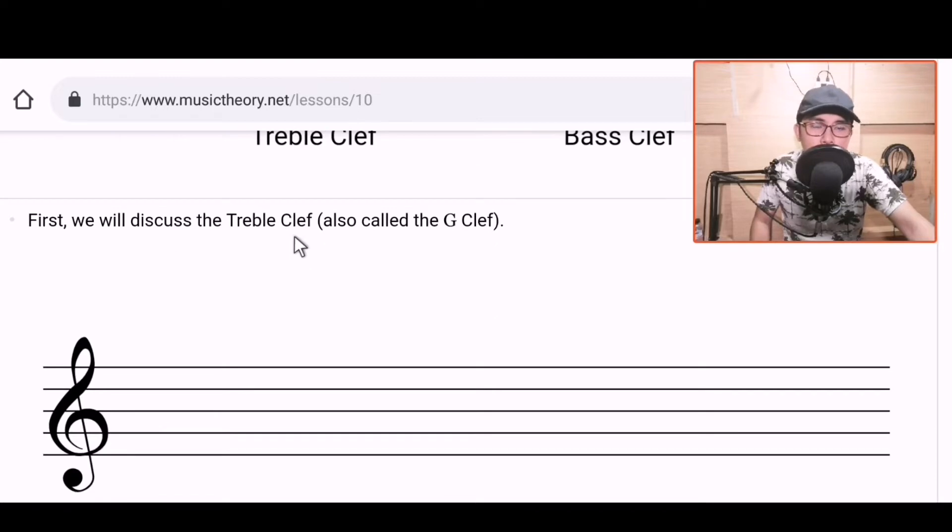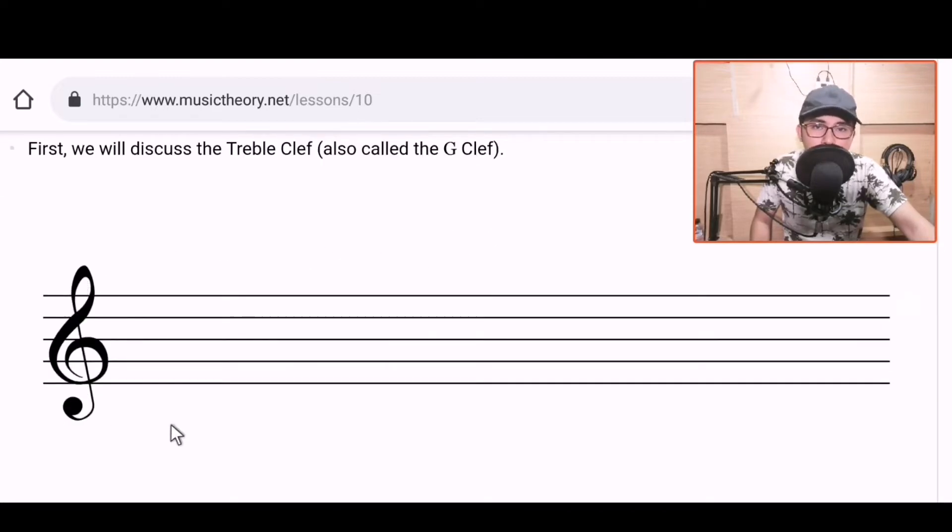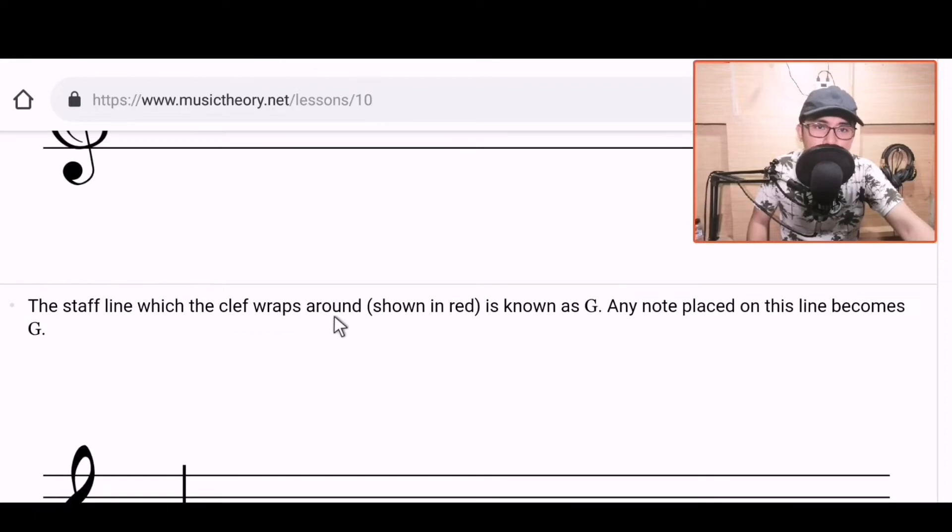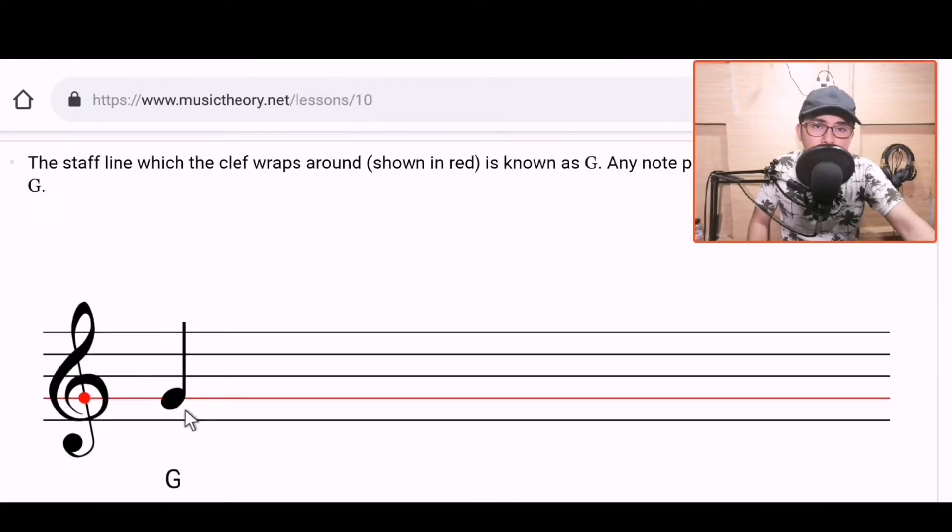First, we will discuss the treble clef, also called the G clef. This. Don't forget this sign. Because this is one of the symbols that I think many of you commonly overlook. Because it's often used as a symbol. The staff line which the clef wraps around, shown in red, is known as G. Any note placed on this line becomes G.